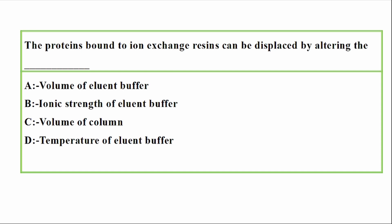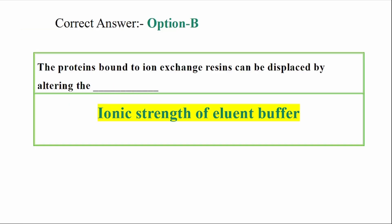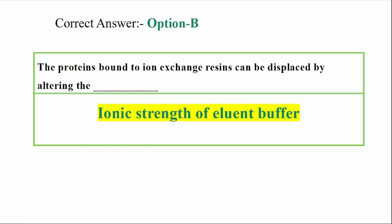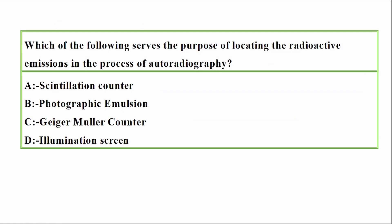Question: The proteins bound to ion exchange resins can be displaced by altering which of the following? Options: A — Volume of eluent buffer, B — Ionic strength of eluent buffer, C — Volume of column, D — Temperature of eluent buffer. Correct answer: Option B — Ionic strength of eluent buffer. Proteins bound to ion exchange resins are displaced by altering the ionic strength of the eluent buffer.